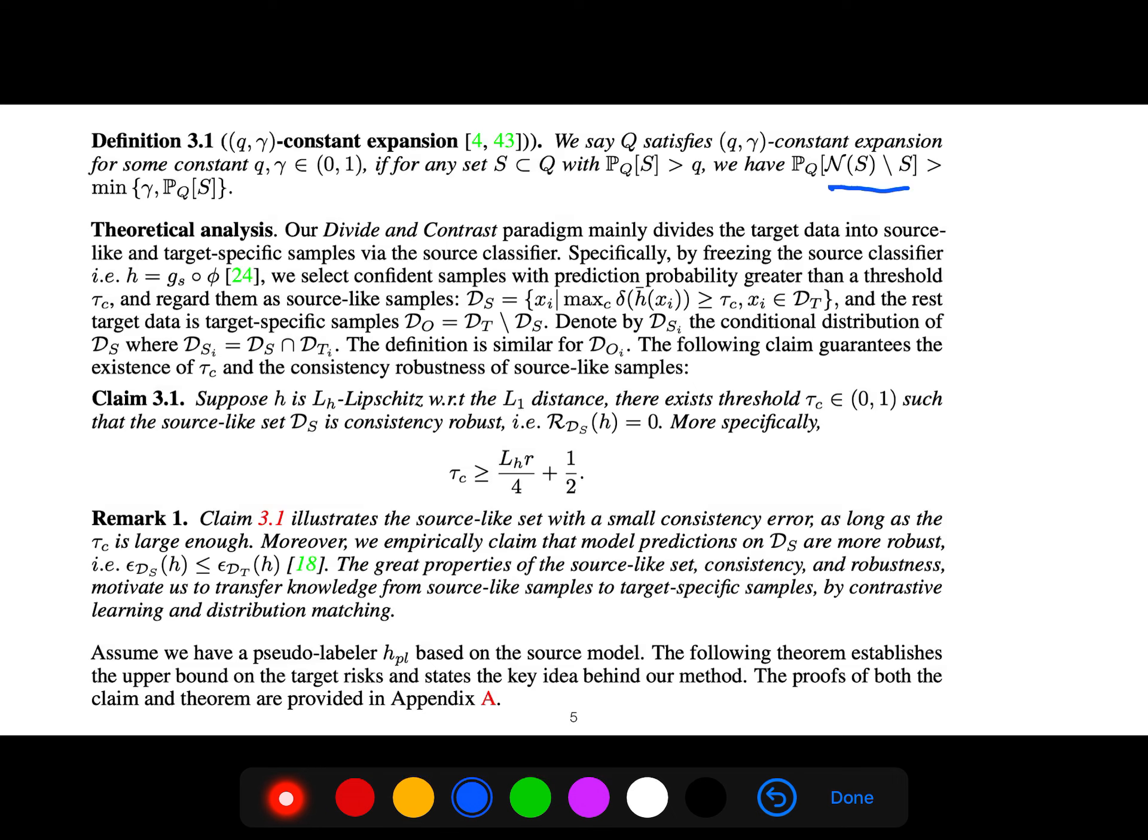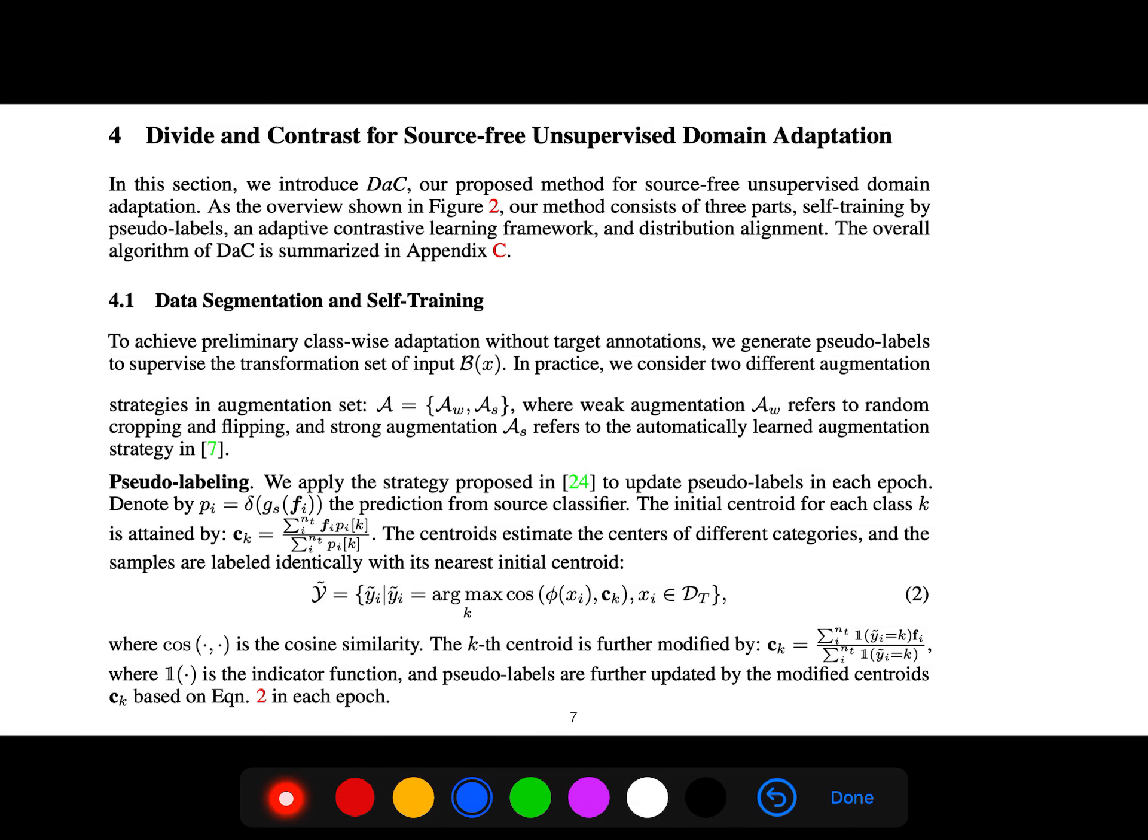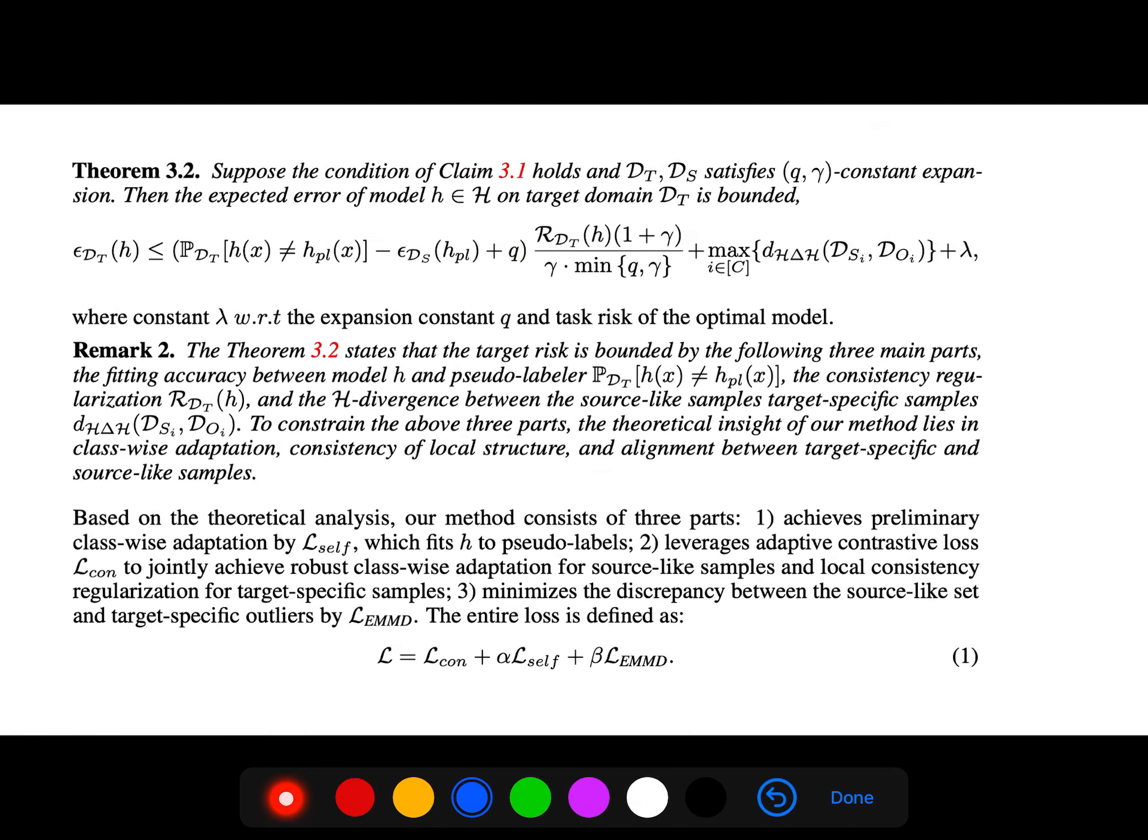The claim is that suppose h satisfies these properties, there exists a threshold such that the source set is consensus robust. This paper is a little bit theoretical, so I'll just skip some things.